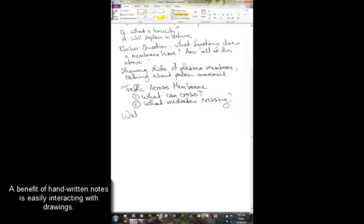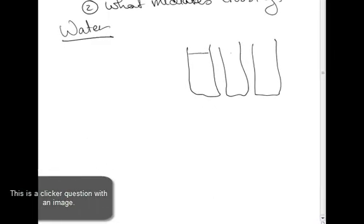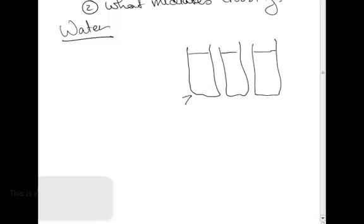We have exactly the same type of cell, and we have three different solutions. One solution is hypertonic with respect to the cell, to the cytoplasm of the cell. The other one is isotonic with respect to the cell. And the other one is hypotonic with respect to the cell.